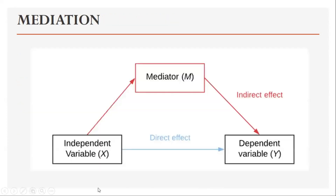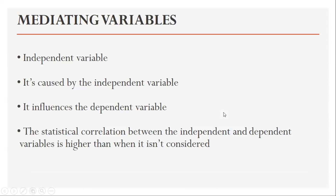As you can see from the diagram, the independent variable has a direct relationship with the dependent variable, but it also has a relationship with the mediator, and that has an indirect effect on the dependent variable. In a way, a mediator is caused by the independent variable, it influences the dependent variable, and when it's taken into account the statistical correlation between the independent and dependent variables is higher than when it isn't considered.